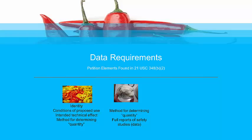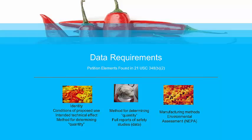I'm paraphrasing a lot of the statute — I encourage you to look at §348(b)(2)(A) through (E), the statutory elements. The FDA must have a method for determining the quantity of the substance present. Safety data is going to be the core of any food additive petition. Something unique to food additive petitions — versus GRAS notifications — is an environmental assessment. The National Environmental Policy Act, enacted around 1993–1995, put the FDA under an obligation to conduct an environmental assessment for the use and disposal of these substances.